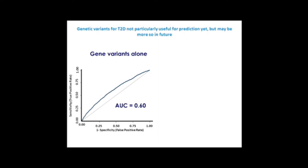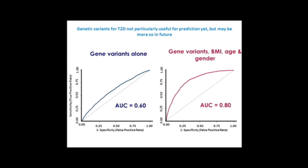It was hoped early on that genetic studies like this would really help predict who would develop conditions such as diabetes and who would not. This has not been as successful as the gene-finding experiments alone. Using a receiver operator characteristic area under the curve, you're looking for a value of about 0.85 to give clinically useful prediction. The gene variants alone only give you a 0.6 area under the curve. Adding in BMI, age, and gender takes that up to 0.8, and if you take out the genes entirely you still get 0.78. So the genes are not adding much to this predictive model — though the genes found so far only explain perhaps 10% of the genetic component, so we know there are more to find.